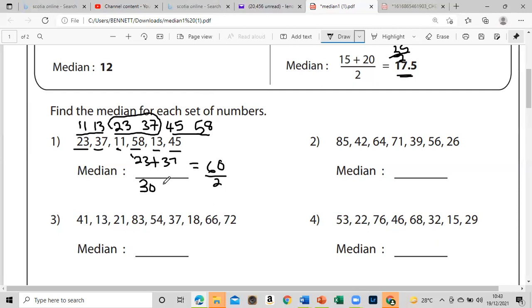Let's move on to number two. What did you guys get? We arrange them in ascending order: 26, 39, 42, 56, then we go to 64, so next we have 71, and then we have 85 for our last one. Let's see if it's odd or even: one, two, three, four, five, six, seven, so it's odd.